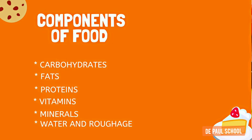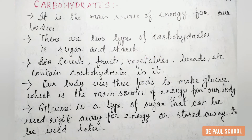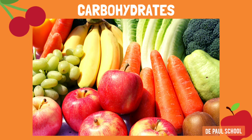The first one is carbohydrates. Carbohydrates are the main source of energy for our bodies. There are two types of carbohydrates: sugar and starch. Cereals, fruits, vegetables, breads, etc. contain carbohydrates. Our body uses these foods to make glucose, which is the main source of energy for our body. Glucose is the type of sugar that can be used right away for energy or stored away to be used later.